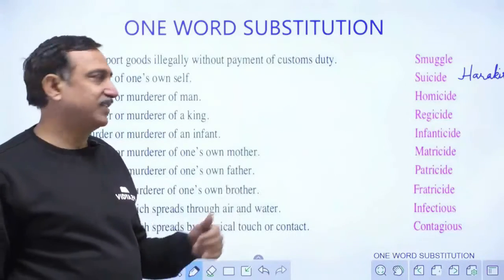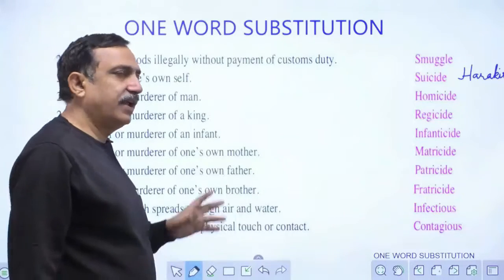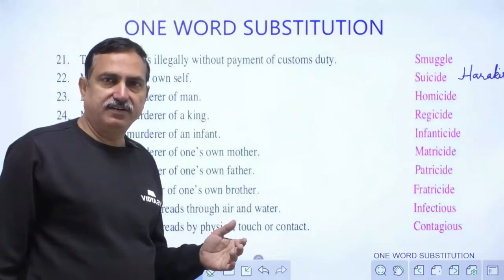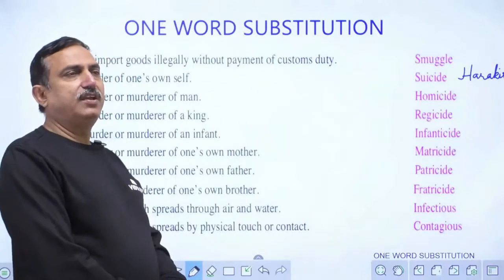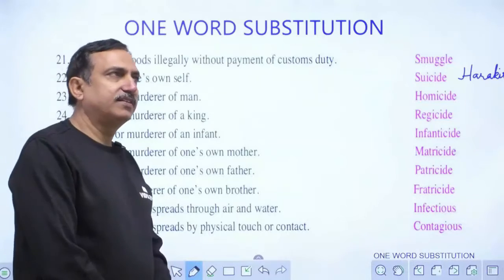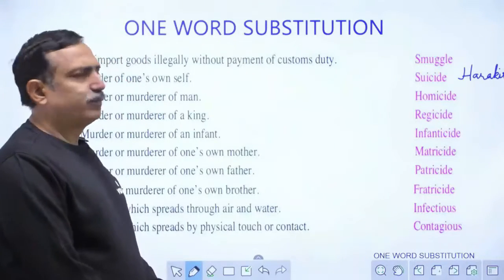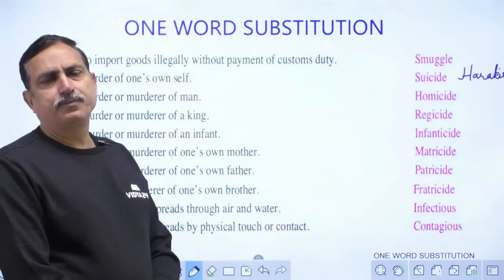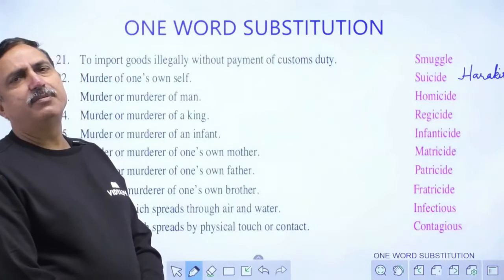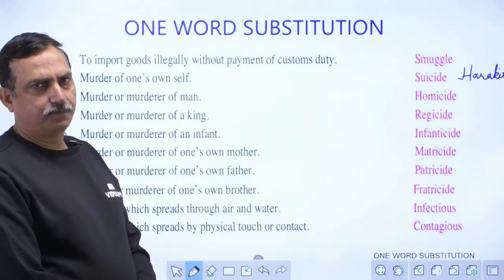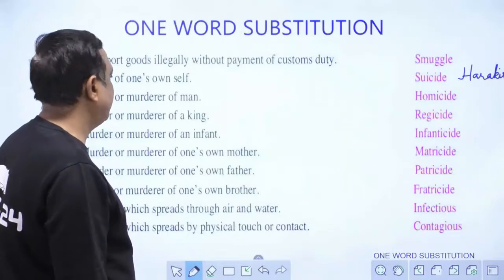Murder of a king is called regicide. In Nepal, we saw that the king, queen, and son were murdered, so regicide took place in Nepal. At present, there is a democracy in Nepal.